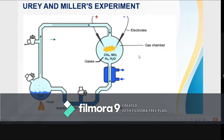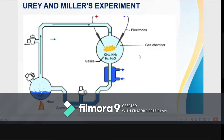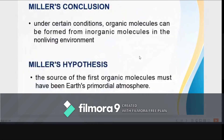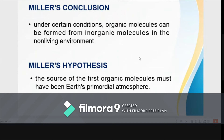On its way out of the chamber, the charged mixture of gases was cooled, allowing the water vapor to condense and collect in a flask with water to simulate the primitive ocean. The collected water was subjected to chemical analysis and was found to contain many organic compounds including some amino acids. In subsequent experiments, Miller and other researchers obtained most of the amino acids commonly found in organisms together with many other compounds. The conclusion that can be drawn from Miller's experiments is only this: under certain conditions, organic molecules can be formed from inorganic molecules in the non-living environment.